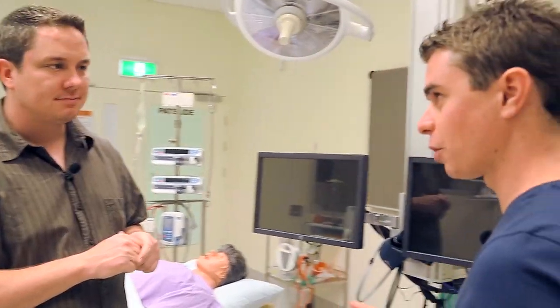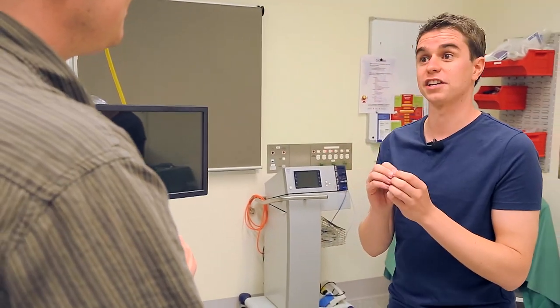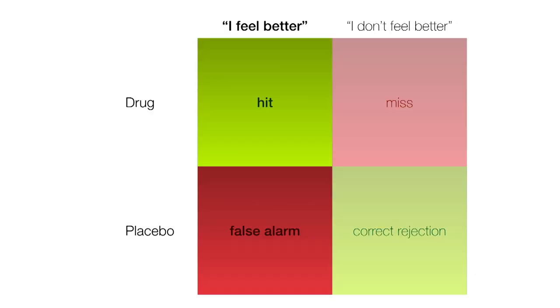The exact same thing is happening with the placebo effect. Again, there are two ways of being right and two ways of being wrong — four possible outcomes. You can take a pill with no active ingredient (a placebo) or one with an active ingredient (a drug), and you can either report feeling better or not. A response bias in this case is just a tendency to report feeling better regardless of whether you took a drug or a placebo.